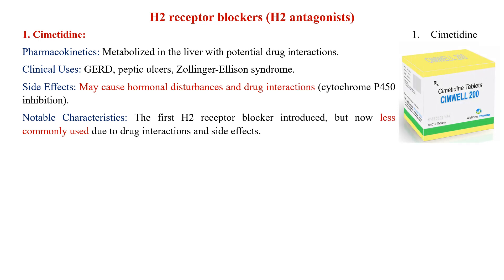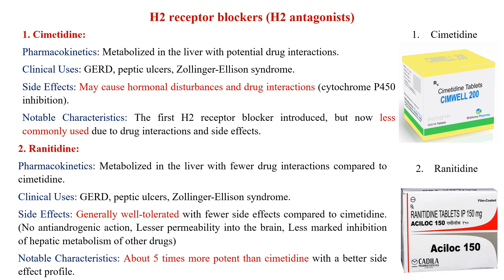Now let's compare the individual drugs. Cimetidine is metabolized in the liver with potential drug interactions; used in GERD, peptic ulcers, and Zollinger-Ellison syndrome. It may cause hormonal imbalance and drug interactions and has the most side effects. It was the first H2 receptor blocker introduced but is now less commonly used due to drug interactions and side effects. Ranitidine is metabolized in the liver with fewer drug interactions compared to cimetidine; used in GERD, peptic ulcer, and Zollinger-Ellison syndrome. It is generally well tolerated with fewer side effects, no anti-androgenic action, lesser permeability to the brain, and less marked inhibition of hepatic metabolism of other drugs. It is about 5 times more potent than cimetidine with a better side effect profile.